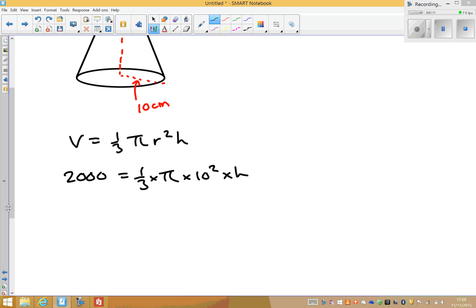And all I need to do now is rearrange this equation. So think about what I've done to the height. I've multiplied it by 10 squared and pi and a third. I just need to divide by all of those things. So I'll end up with height equals 2,000 divided by a third times pi times 10 squared.